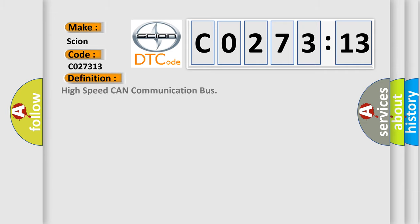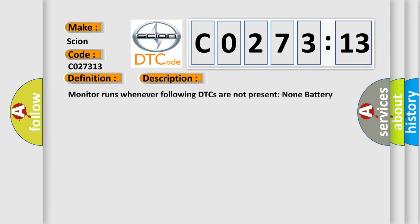The basic definition is high-speed CAN communication bus. And now this is a short description of this DTC code.